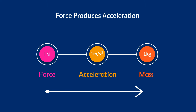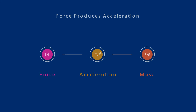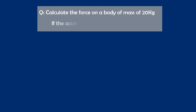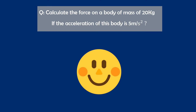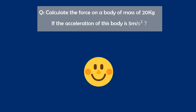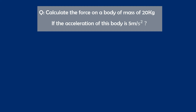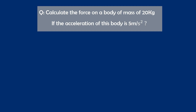Now let me teach you the concept of finding force in accelerated bodies. Calculate the force on a body of mass 20 kg if the acceleration of this body is 5 meter per second square. In this numerical we have been already told about three physical quantities: the mass of a body is 20 kg and the acceleration of the body is 5 meter per second square, while we are asked to find the force on the body.